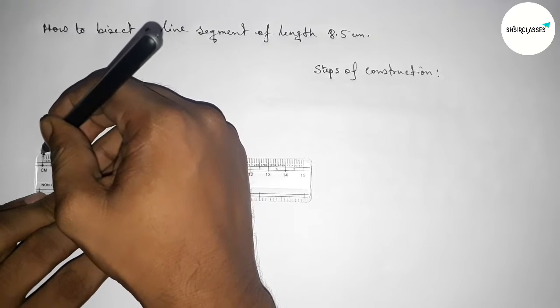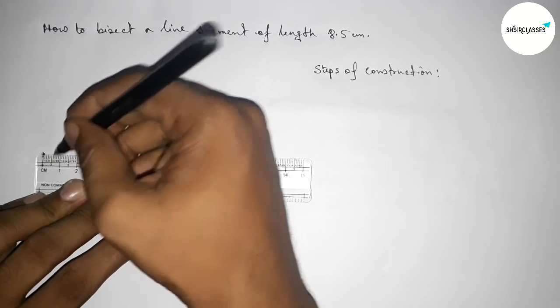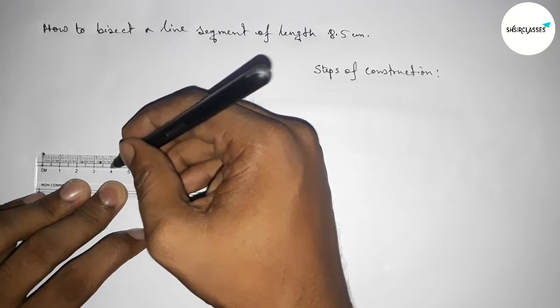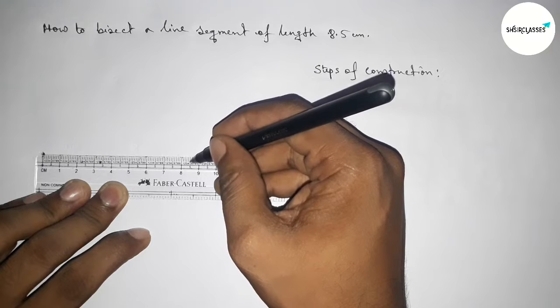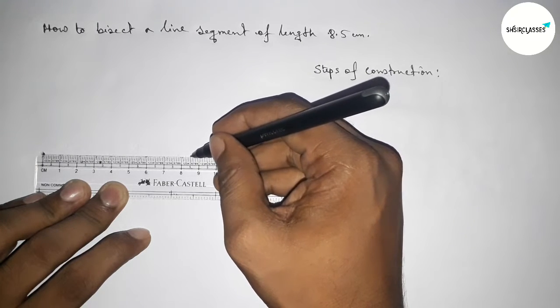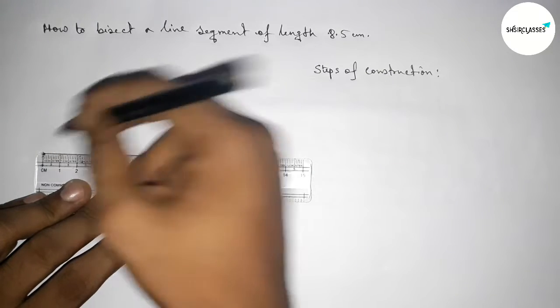This is starting at zero: one, two, three, four, five, six, seven, eight, and this is the 8.5 centimeter line segment.